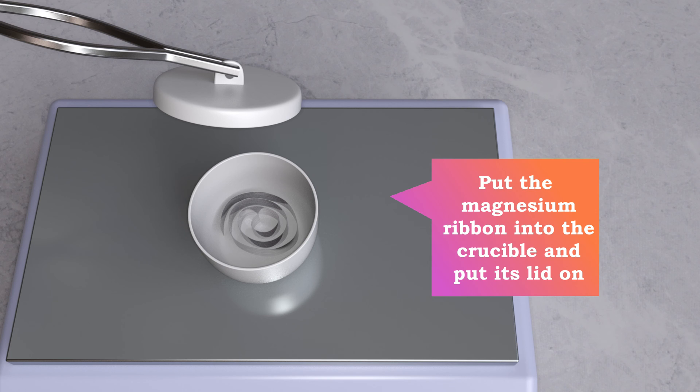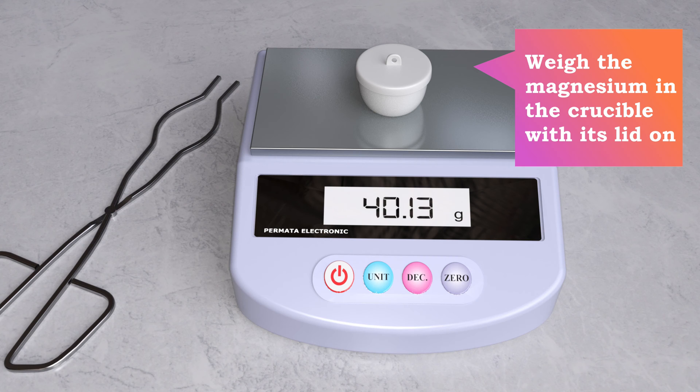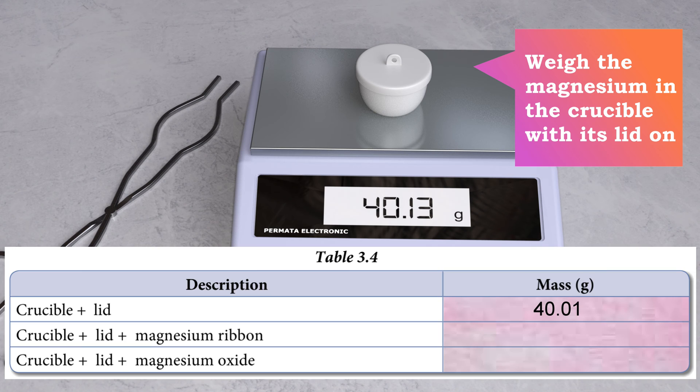Using tongs, put the magnesium ribbon into the crucible and put its lid on. Weigh the magnesium in the crucible with its lid on. Record the reading of 40.13 grams into the table.